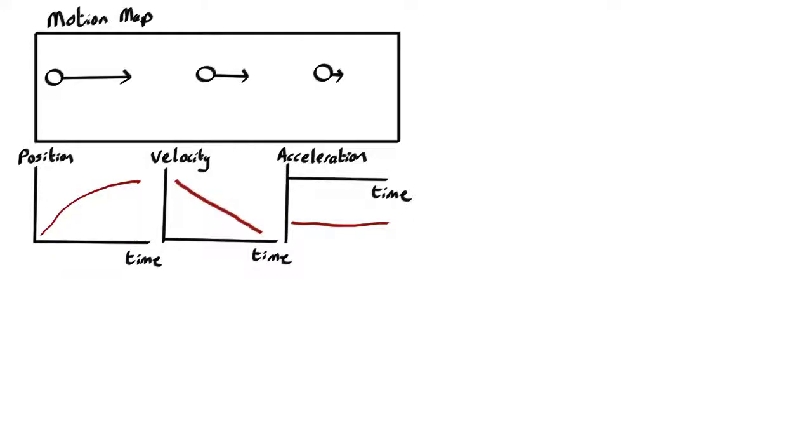Now, the second sort of consistency check is between the motion map and the graphs of position, velocity, and acceleration.